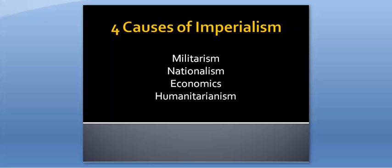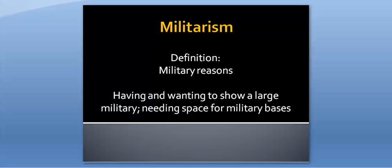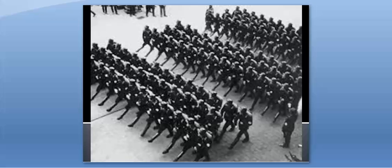Imperialism has four main causes. We're going to talk about each of these individually. The first is militarism, or military reasons, as one cause of imperialism. Some countries have very advanced militaries and want to show the rest of the world. This desire to prove their military worth can lead to imperialism. Also, countries with large militaries and therefore large navies need ports and bases around the world for fuel and supplies. As countries spread out more around the world, they need to imperialize other countries for their own military needs.